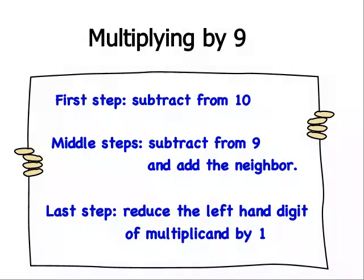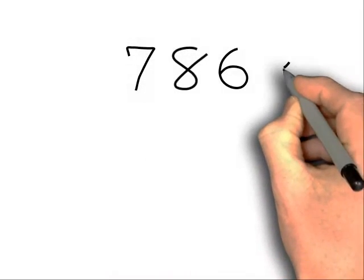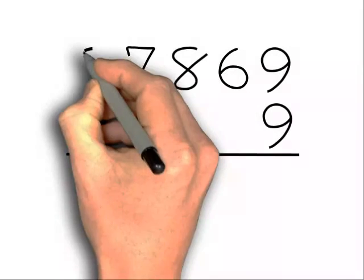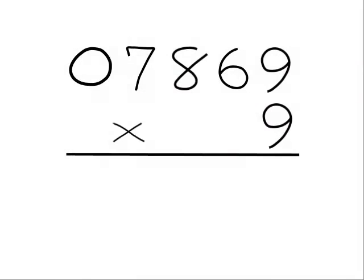Let's have a look at an example. Let's have a look at 7869 times 9. The first thing we do is put a 0 in front of the number.